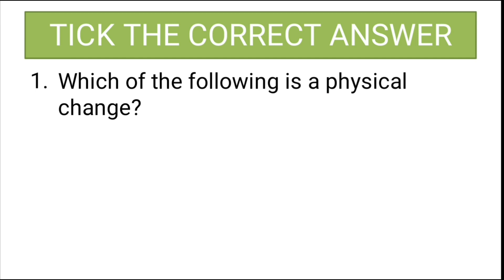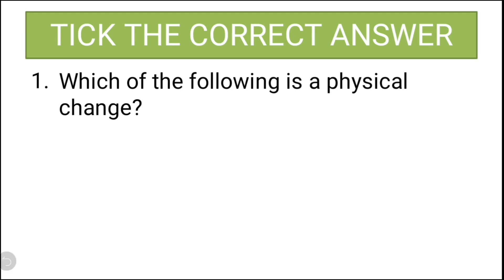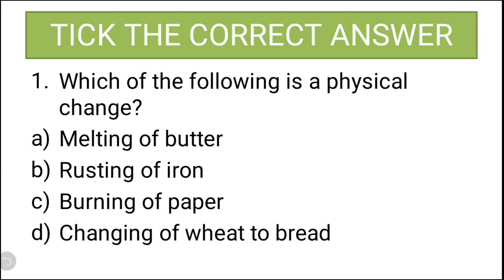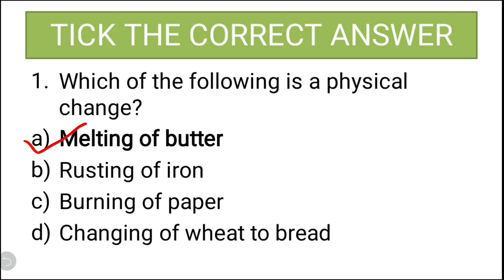Starting with tick the correct answers, that is MCQs. The first question is: which of the following is a physical change? The options are melting of butter, rusting of iron, burning of paper, and option D, changing of wheat to bread. Physical change means it is merely a change in state of matter and it is a reversible change — you can reverse it. For example, solid can be converted to liquid and back to solid, without changing the chemical composition. So the correct answer is A, melting of butter.